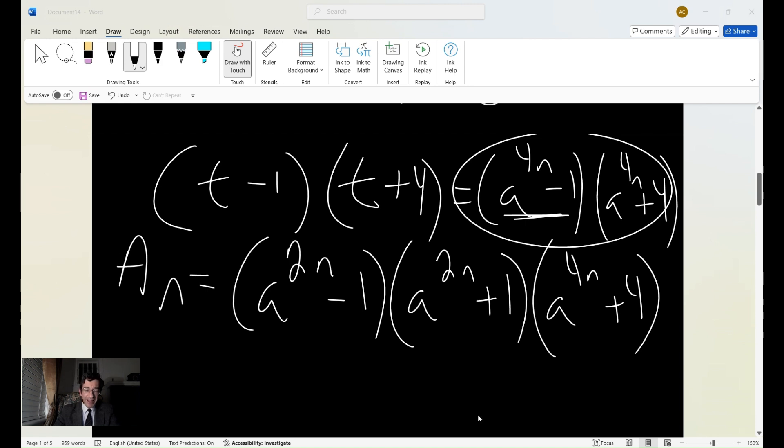So if A_n is odd, the factors we have here, a^(2n) - 1 and a^(2n) + 1, well, those are even. So obviously, in that case, A_n is divisible by 4. And we're done.